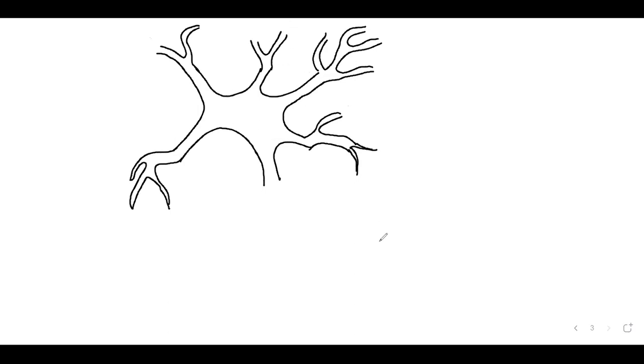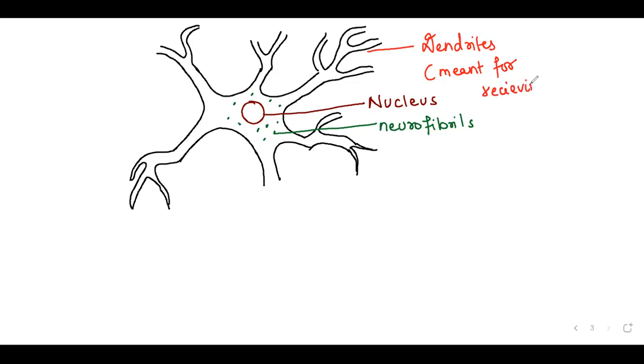So this part is known as cyton. In this, you will see the central nucleus. Here, some fibril-like structures are there and we can say that these are neurofibrils. These are branch-like structures known as dendrites. They are meant for receiving messages or receiving signals.